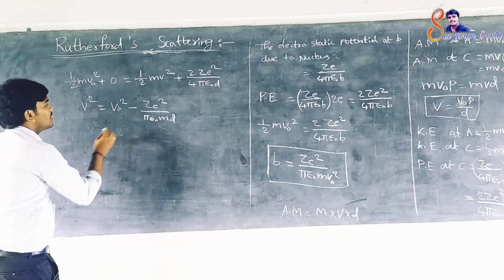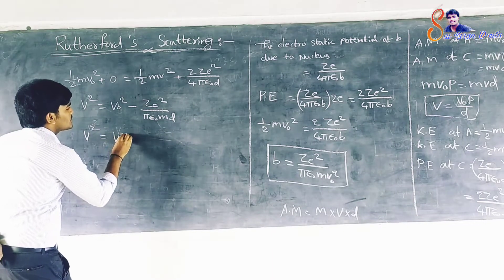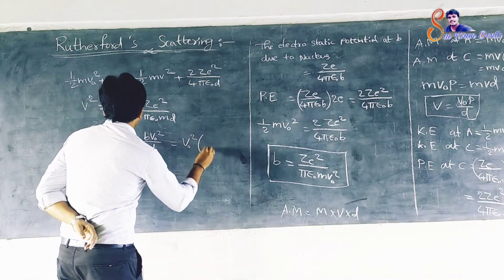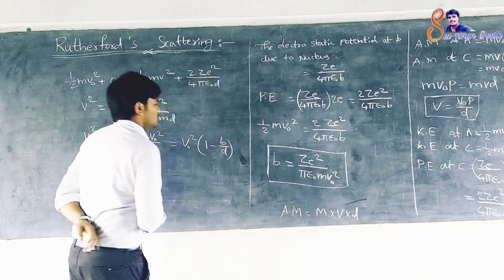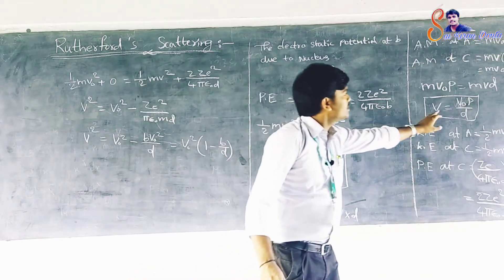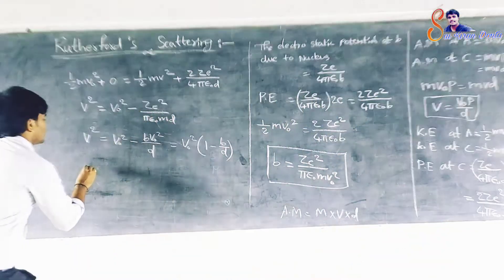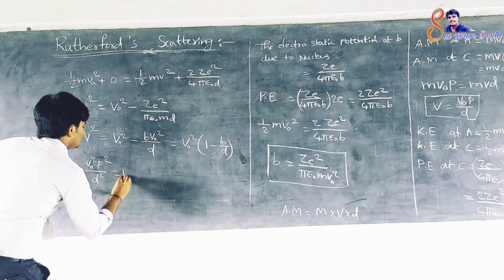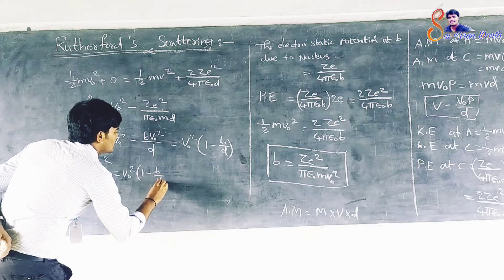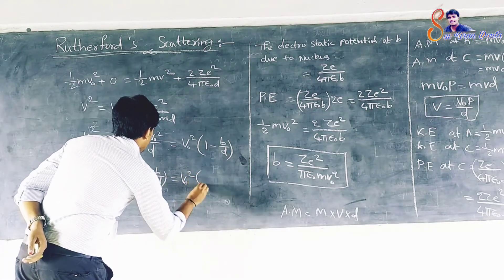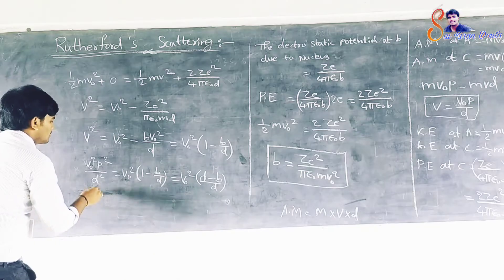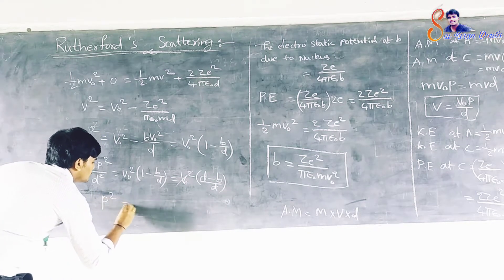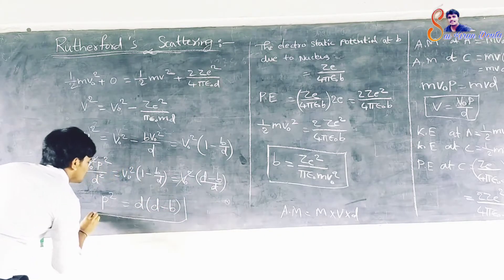We get V² is equal to V₀² minus Ze² by πε₀MD, which simplifies to V₀²(1 minus B by D). Substituting V equals V₀P by D into V² equals V₀²(1 minus B by D), we get V₀²P² by D² equals V₀²(D minus B) by D. After cancellation, we can write P² is equal to D(D minus B).